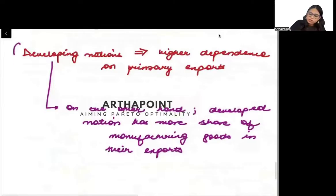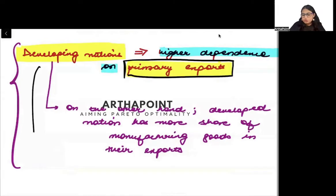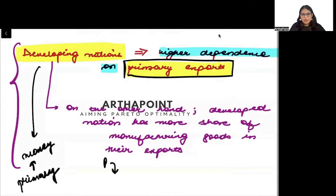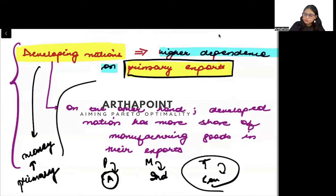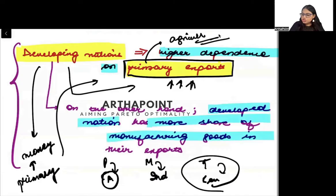Another prominent feature of developing nations is high dependence on primary exports. The money earned from exports comes mainly from exporting primary goods — agricultural goods. On the other hand, developed nations have a larger share of manufacturing goods in their exports. Manufacturing goods are more expensive, so developed nations earn more from their exports.